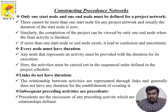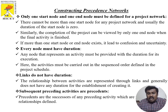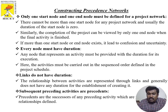Every node must have a duration. Duration tells how much time it takes to go from one node to another. Any node representing an activity must be provided with a duration for its execution. Activities must be executed in sequence order. Links do not have any duration — the relationship between activities through nodes does not carry duration.